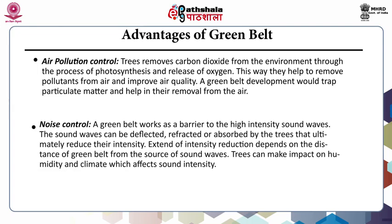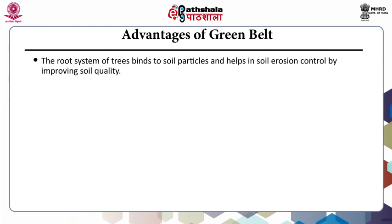The next advantage is noise control. A greenbelt works as a barrier to high-intensity sound waves. The sound waves can be deflected, refracted or absorbed by the trees, ultimately reducing their intensity. The extent of intensity reduction totally depends on the distance of greenbelt from the source of sound waves. Trees can also make an impact on humidity and climate, which further affects the sound intensity.